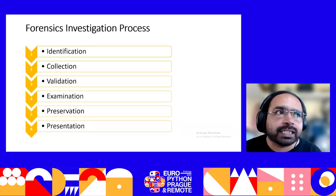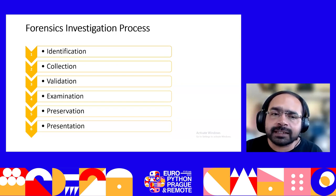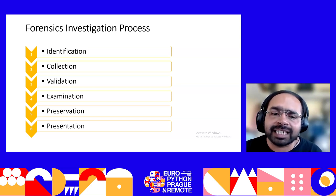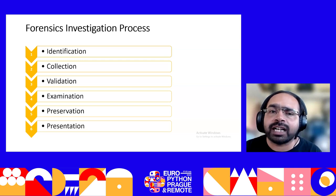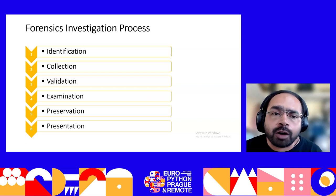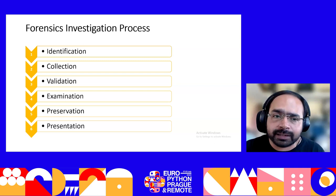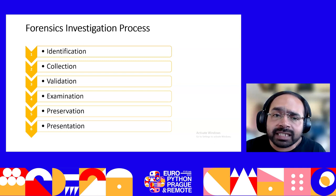The forensic investigation process has six steps. It starts with identification, collection, validation, examination, preservation, and presentation. In the first step — identification — the investigation officer visits the crime location to identify various objects. It may be electronic devices or it may not be electronic devices. They have to collect electronic devices, especially for the cyber forensics process.